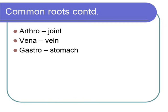The final three roots are: arthro meaning joint, such as arthritis — a disease of the joints in the hands and feet, and other joints as well. Vena meaning vein — the main vein that leads into your right atria is the vena cava. And gastro meaning stomach — a good example is gastrointestinal pains; we've all had stomach problems, and a lot of times that's referred to as gastrointestinal issues.